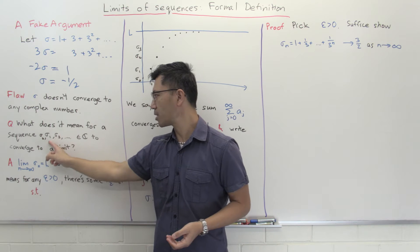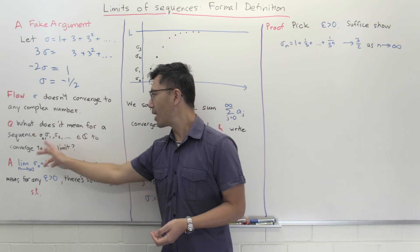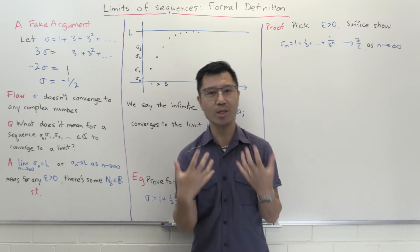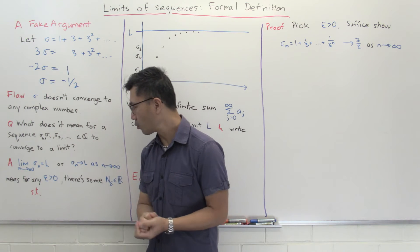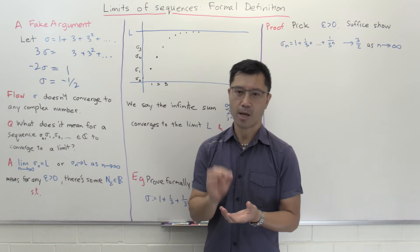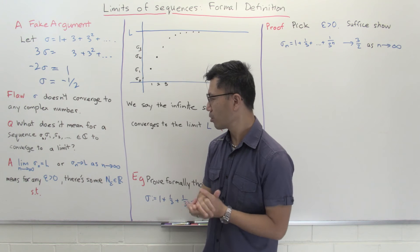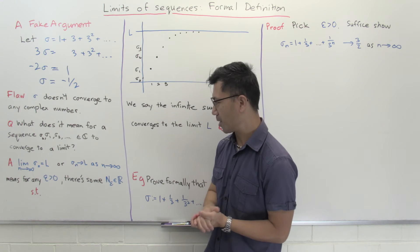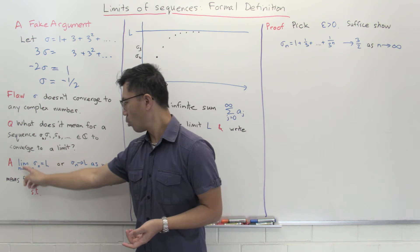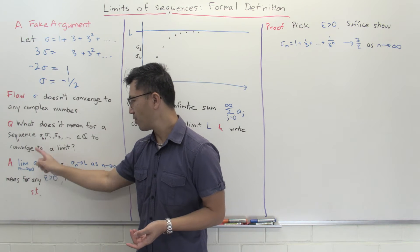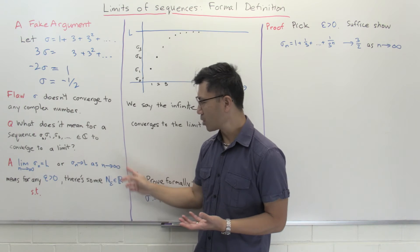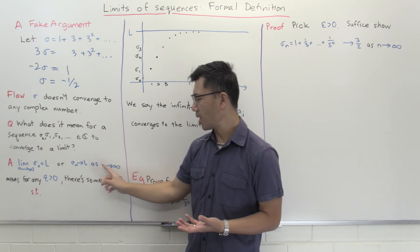Now let's ask: suppose you're given a sequence of complex numbers σ₀, σ₁, σ₂, and so forth. What does it mean for this sequence to converge to a limit? I want to give the formal definition. This is something that often trips up university students, so I want to go through it slowly. The notation we'll use: what does it mean to write the limit as n goes to infinity of σ_n equals L?